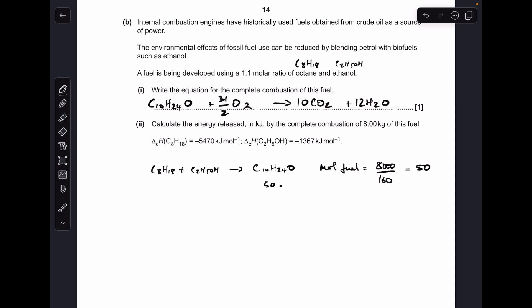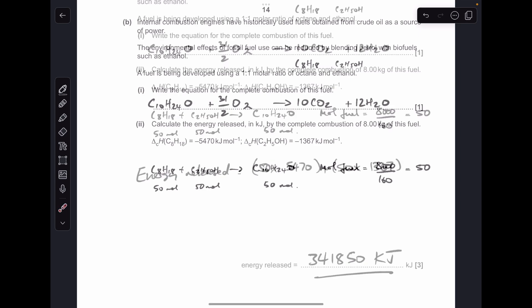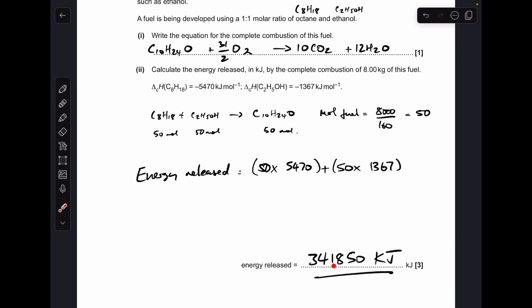So I've got 50 moles of fuel. Now the ratio is one to one, so if I've got 50 moles of fuel, I must have had 50 moles of each of the components. That's how it made sense to me anyway. So now we know that we've got the enthalpy change of combustion for each of the fuels, so we can just multiply that by 50 and that by 50, add them together, and that's going to give us the overall energy released, which comes out at 341850 kilojoules. And just want to say very well done if you got that right because I think that is tricky.